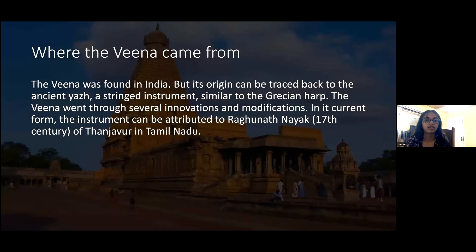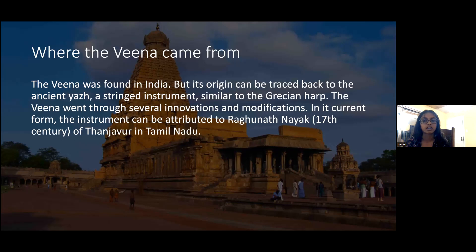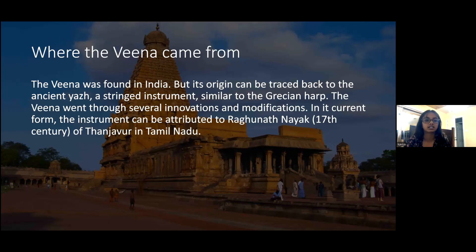The Veena was found in India but its origin can be traced back to the ancient yet, a string instrument similar to the Grecian harp. The Veena went through several innovations and modifications, and in its current form the instrument can be attributed to Ragunath Nayak of the 17th century of Tanjavur, Tamil Nadu.